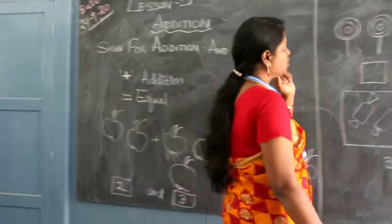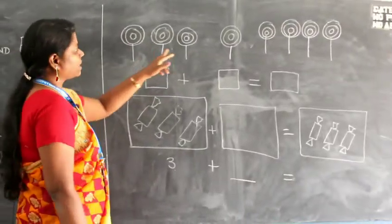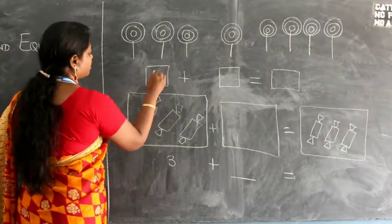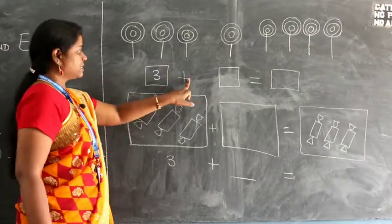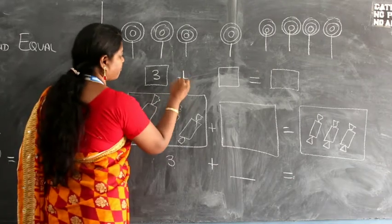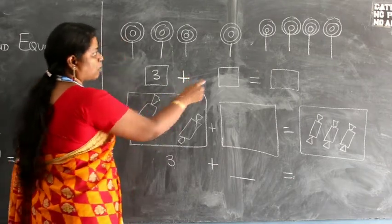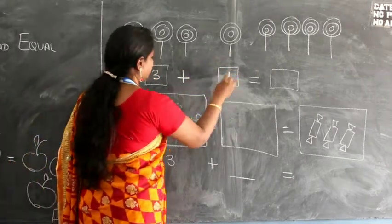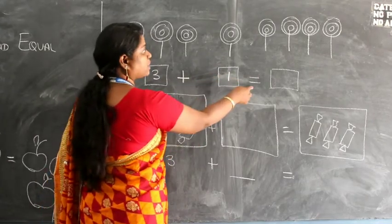Here I will show you. You have to count how many lollipops are there. How many are there? One, two, three. You are going to write three plus. Right. This is your symbol for addition. Plus how many are there? One. So three plus one equal to,